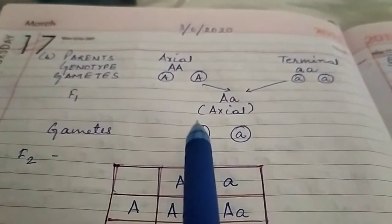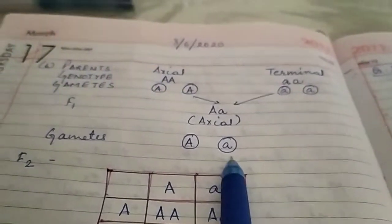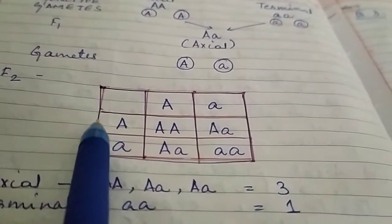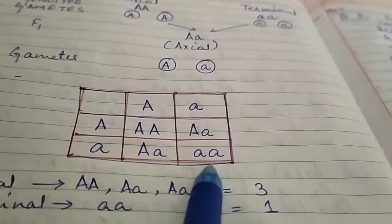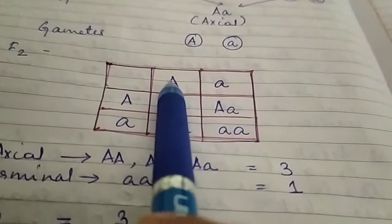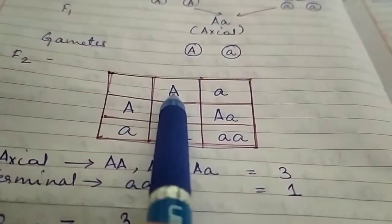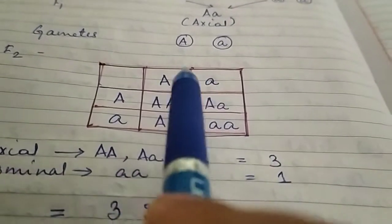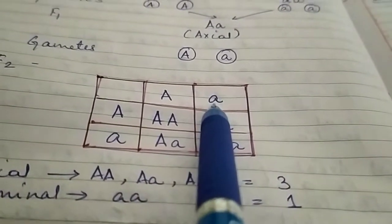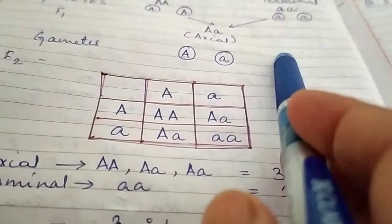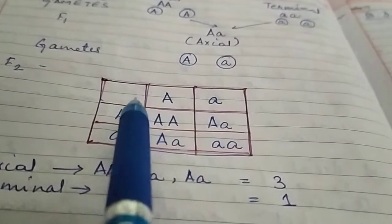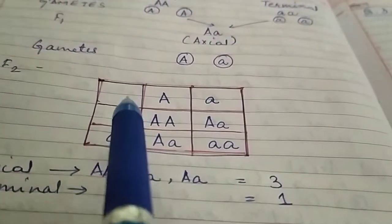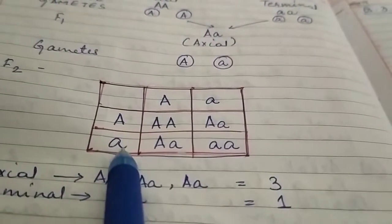Now the gametes of F1 are capital A and small a. We carry out the cross with the help of a Punnett square. We draw a box and write the types of gametes: capital A and small a from one plant. Similarly, when we allow it for selfing, the other possible gametes are again capital A and small a. We then solve by combining these gametes.